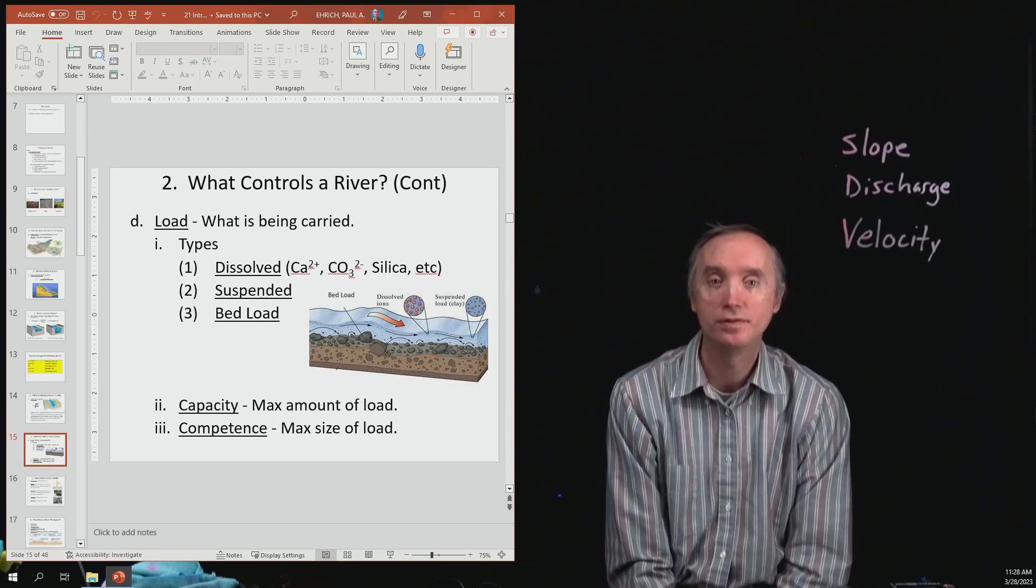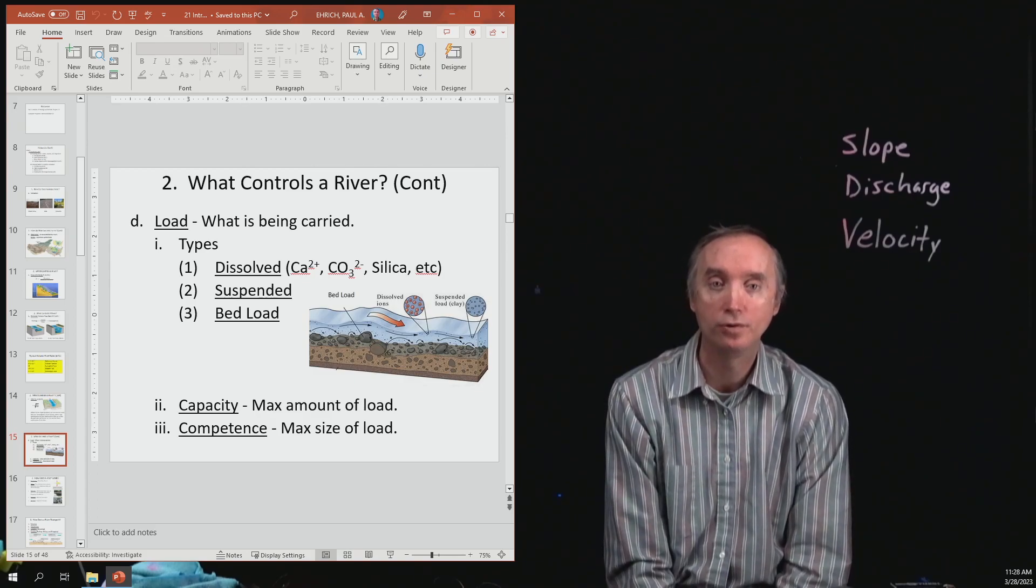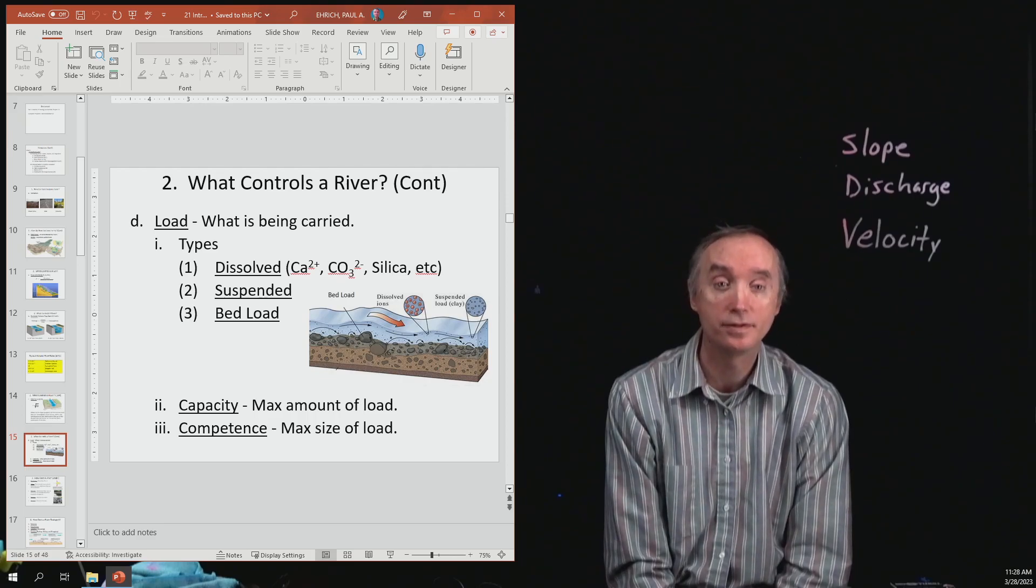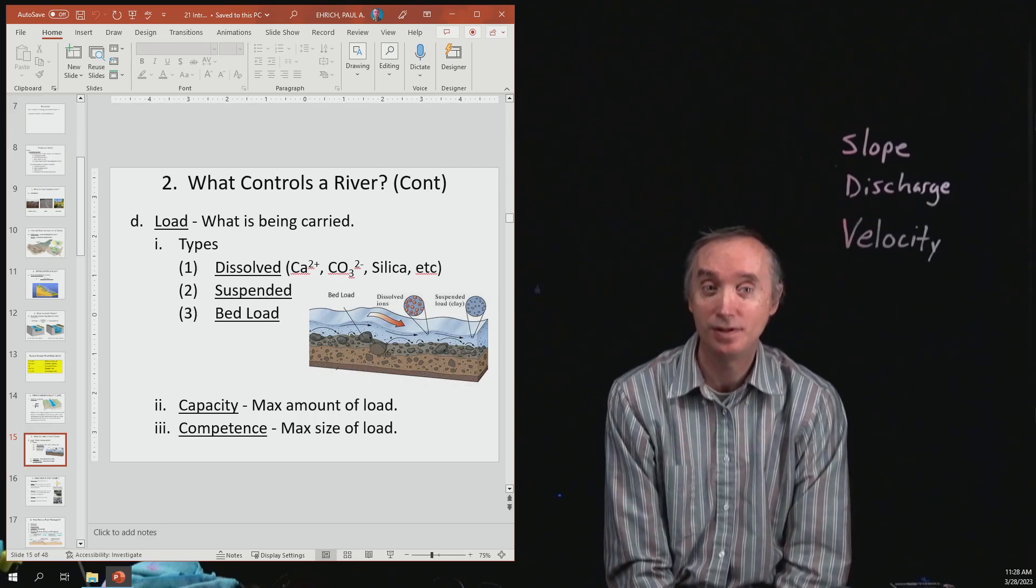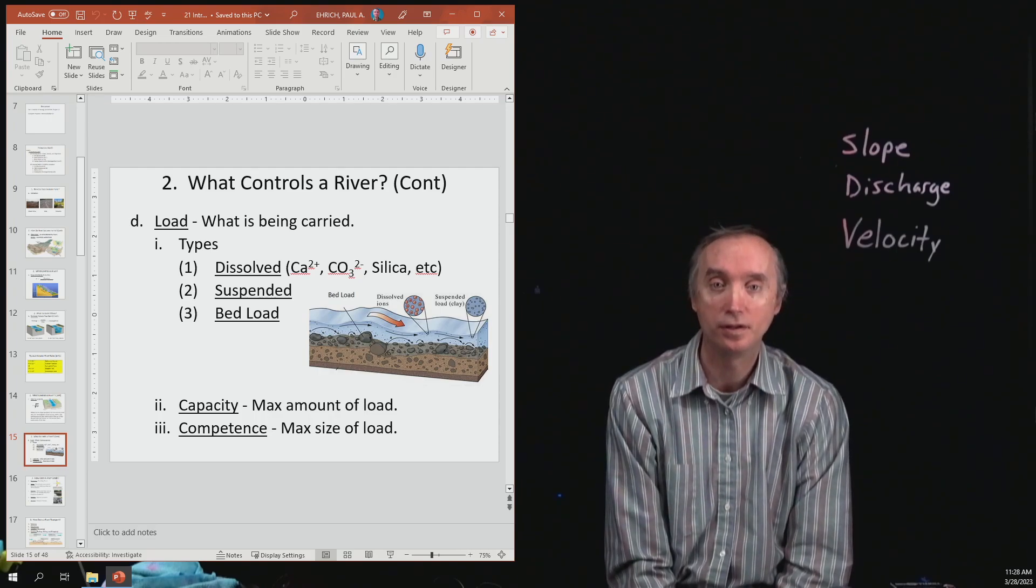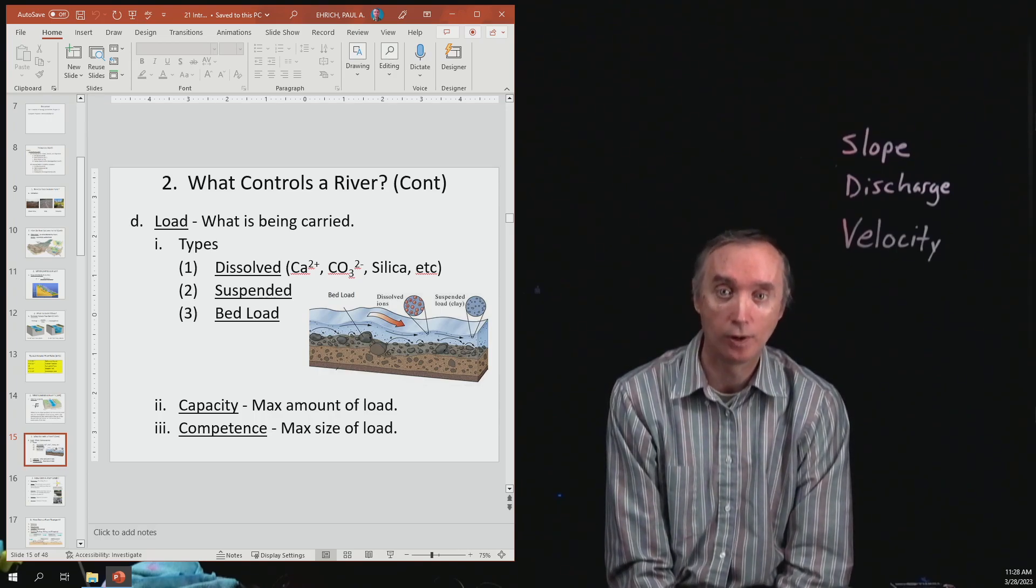Something else that could be dissolved in water could be silica. There's some other ions such as magnesium and aluminum that also could be dissolved in river water as well.